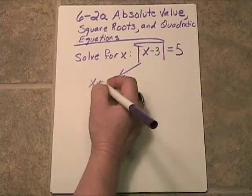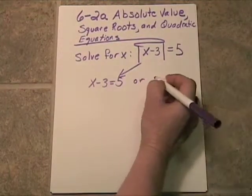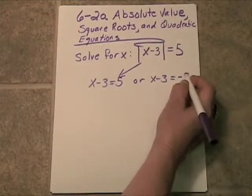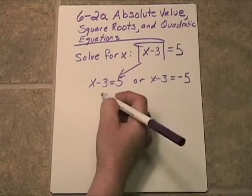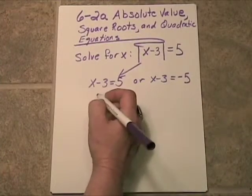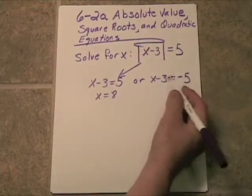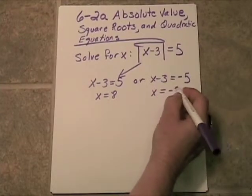So x minus 3 might be equal to 5 or x minus 3 might be equal to negative 5. Let's solve for both of those. If we add 3 on both sides of this equation, we will get x equals 8. And here, if we add 3, we will get x equals negative 2.